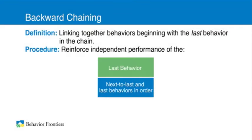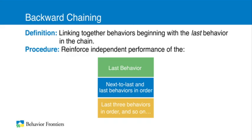Then, reinforce your student's independent performance of the last three steps in order, and continue in this manner until your student can complete the entire chain independently following the SD. An advantage of using backward chaining is that the reinforcement always falls at the end of the chain, allowing you to use a variety of reinforcers.